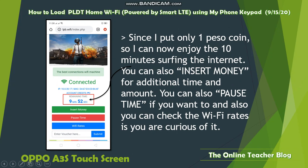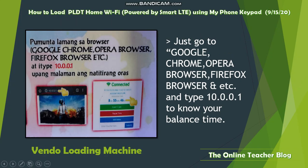You can also insert more money for additional time. You can also pause your time if you want, and check the Wi-Fi rates. The display shows the time remaining. Just go to Google Chrome, Opera Browser, Firefox, or any other internet browser you prefer, and type '10.0.0.1' to check your balance and remaining time. This is where you can enter the URL to see your number and balance.